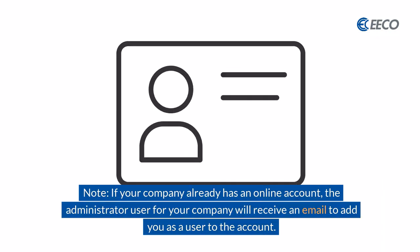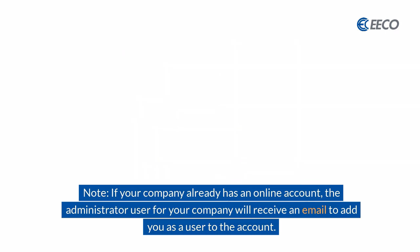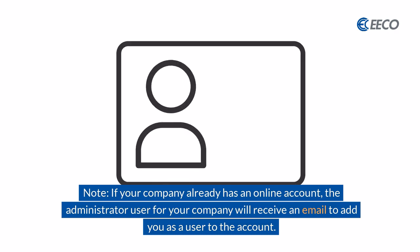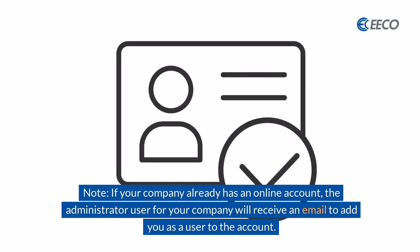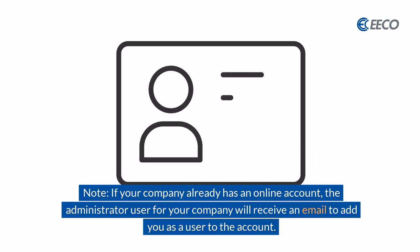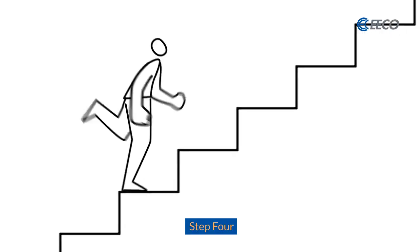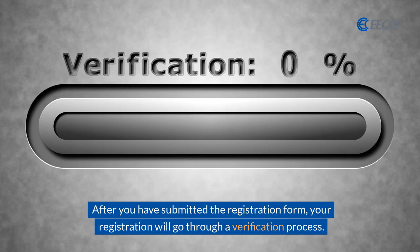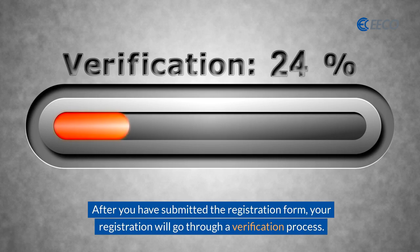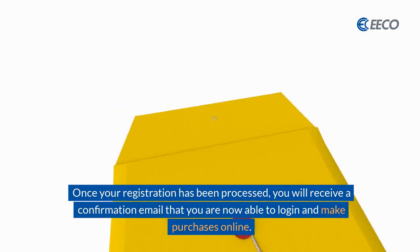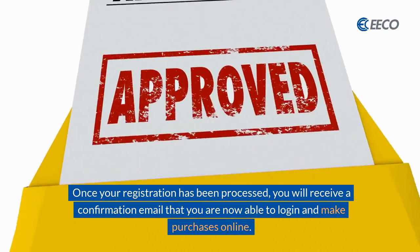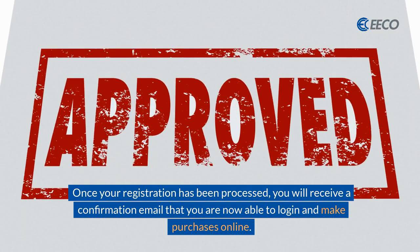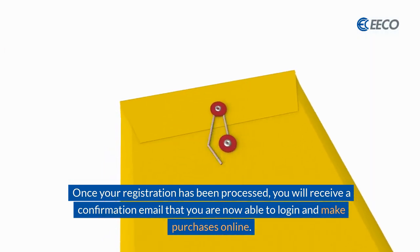If your company already has an online account, the administrator user for your company will receive an email to add you as a user to the account. After you have submitted the registration form, your registration will go through a verification process. Once your registration has been processed, you will receive a confirmation email that you are now able to log in and make purchases online.